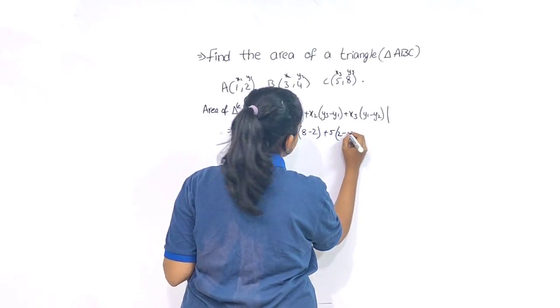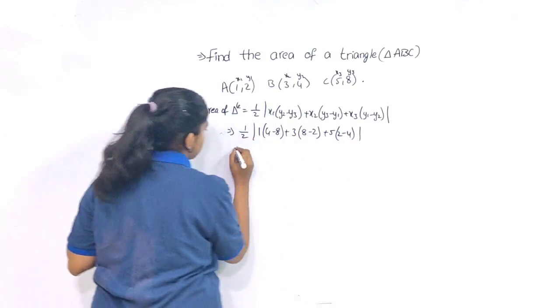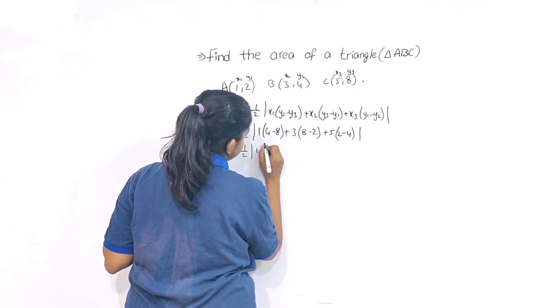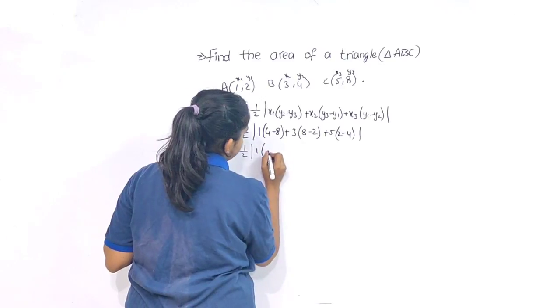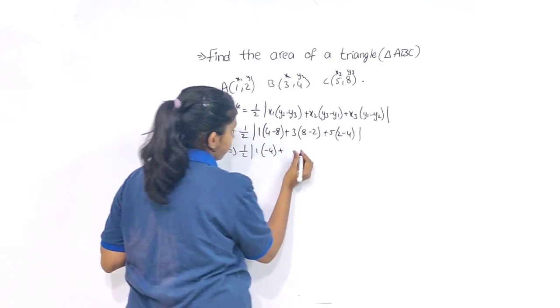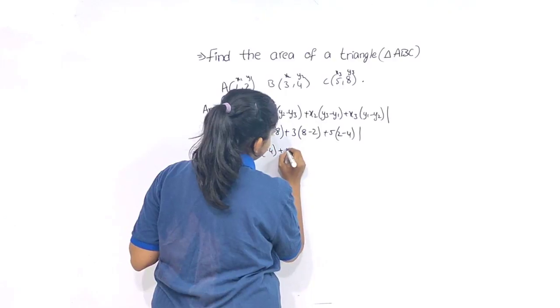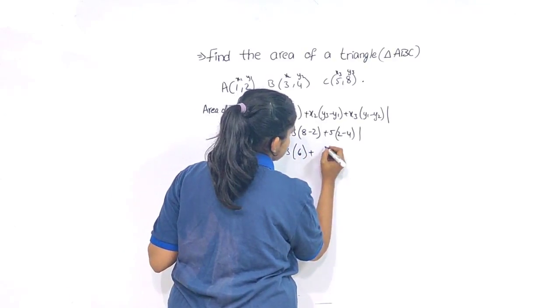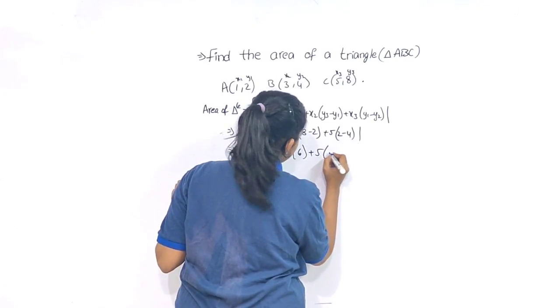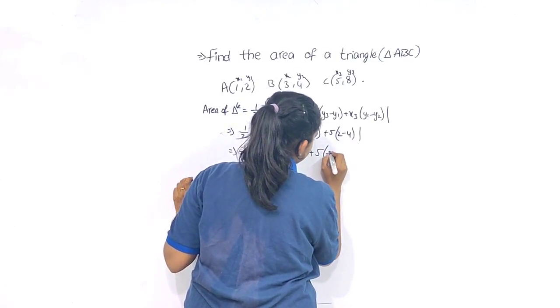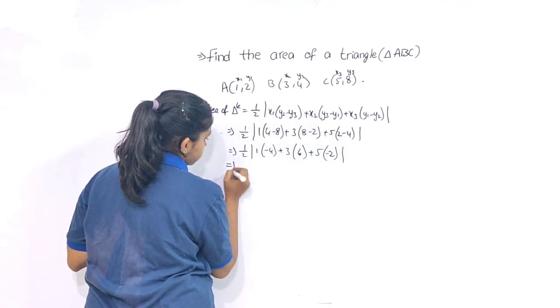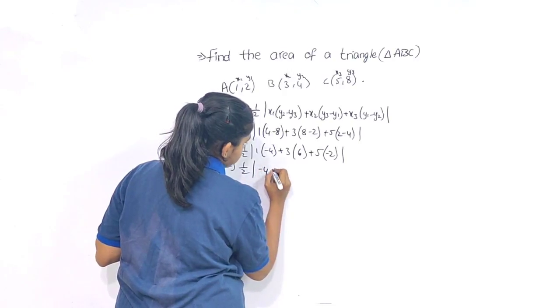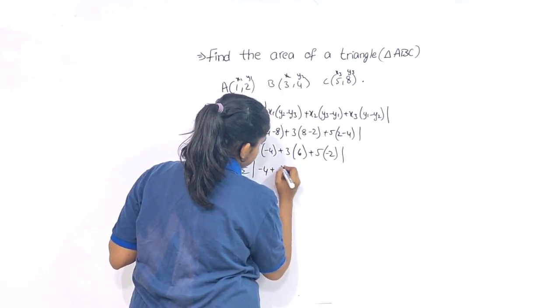Then half modulus: 8 minus 4 is minus 4, plus 3 times 8 minus 2 is 6, plus 5 times 2 minus 4 is minus 2, modulus. Then half: 1 into minus 4 is minus 4, plus 3 times 6 is 18, plus 5 times minus 2.